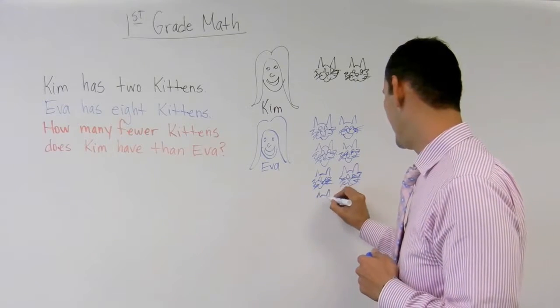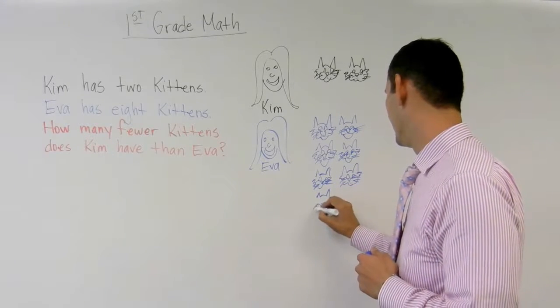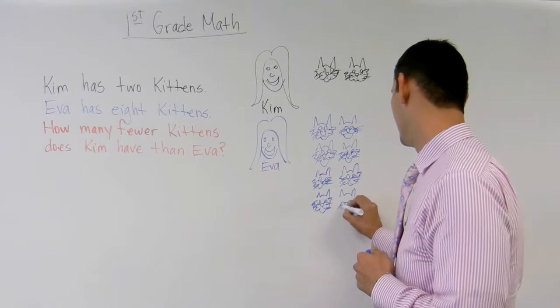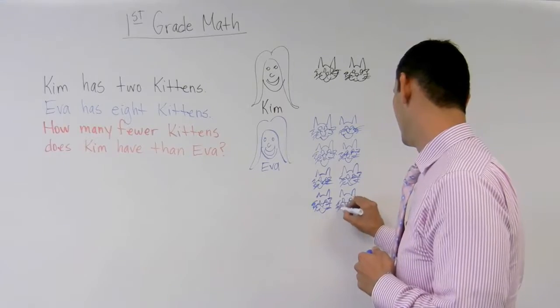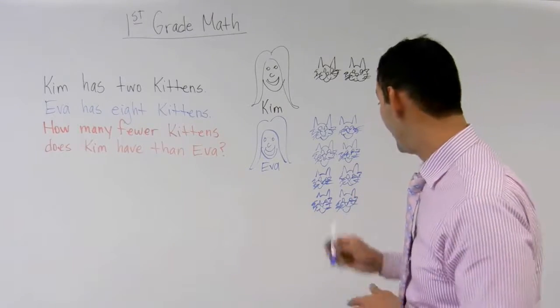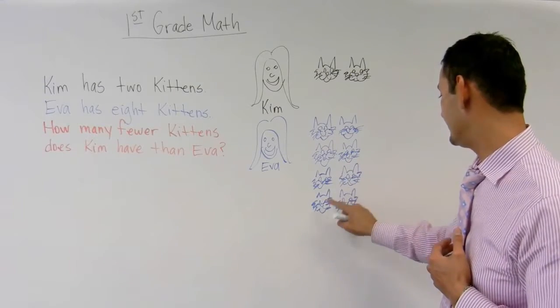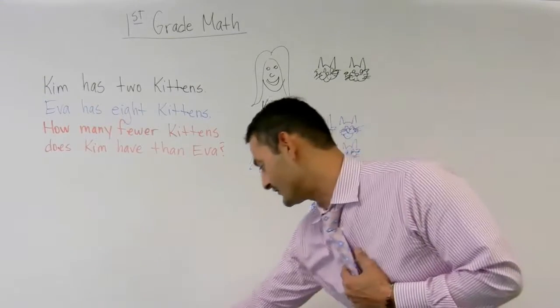So I've got six so far. I think I have eight. Let me make sure. One, two, three, four, five, six, seven, eight. Yes, I have eight kittens, right?